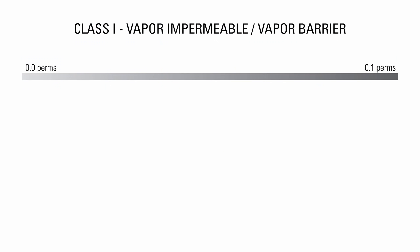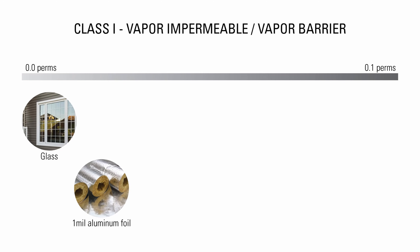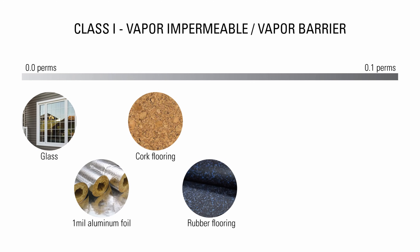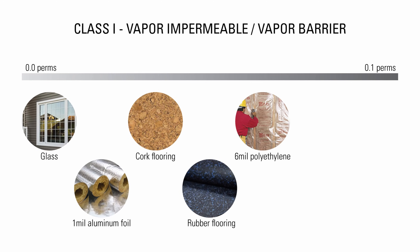Now let's look at the US perm ratings of the most common building materials. The lower the number, the less likely it is to allow water vapor through. The first classification includes materials with a perm rating of 0.1 or less. They are considered vapor impermeable or a vapor barrier — they barely allow any vapor through. This includes glass, 1 mm aluminum foil, cork flooring, rubber flooring, 6 mm polyethylene, sheet metal and foil faced polyiso.